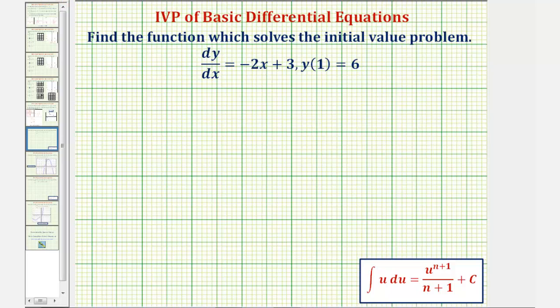We want to find the function which solves the initial value problem, dy/dx equals -2x + 3 and y(1) equals 6.